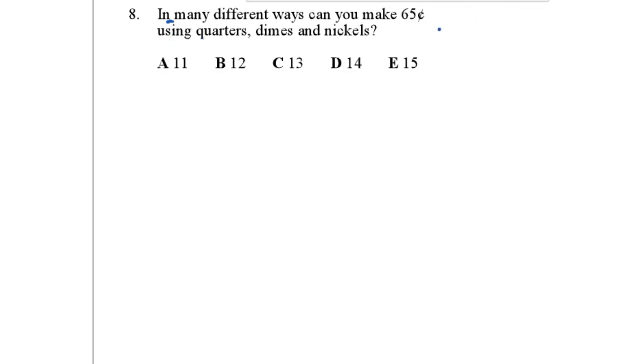Okay, so I know I have quarters, 25 cents. I have dimes, 10 cents. And I have nickels, 5 cents. And I want to make 65 cents in as many different ways as possible. I want to know how many different ways can I make 65 cents using only quarters, dimes, and nickels, or 25's, 10's, and 5's.